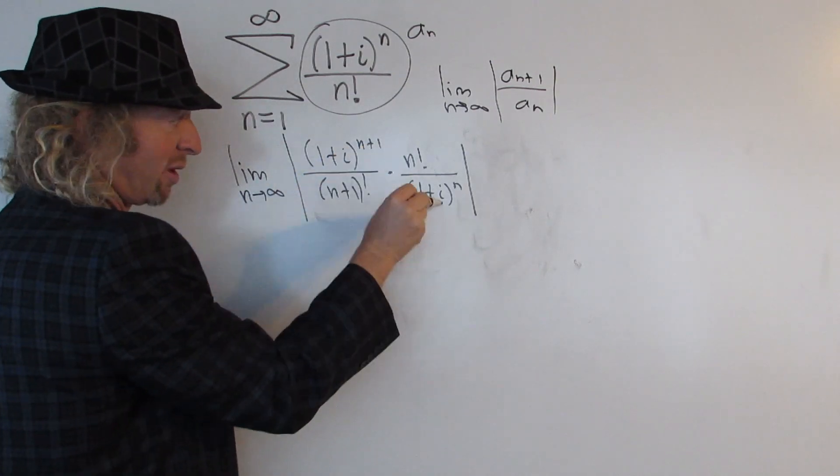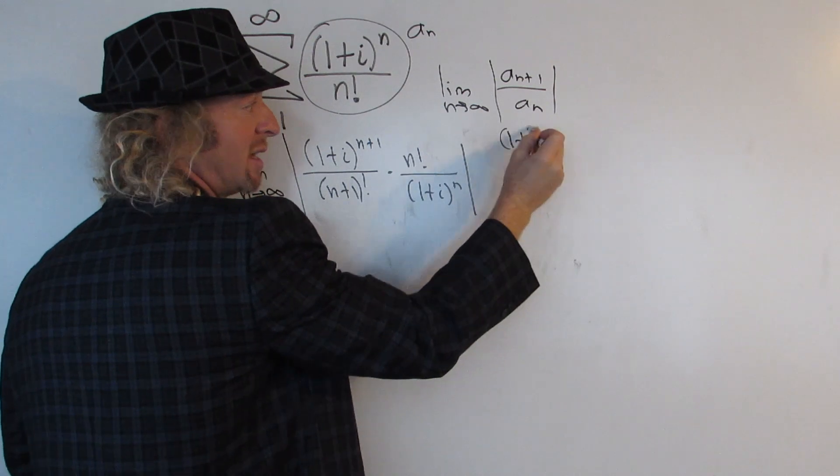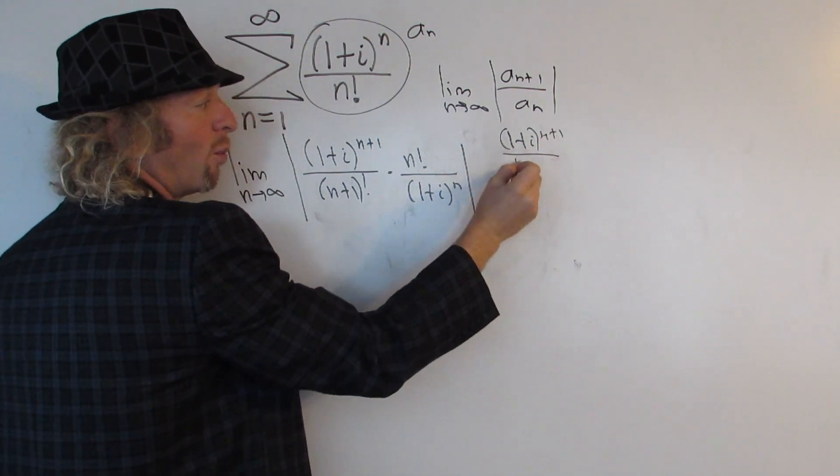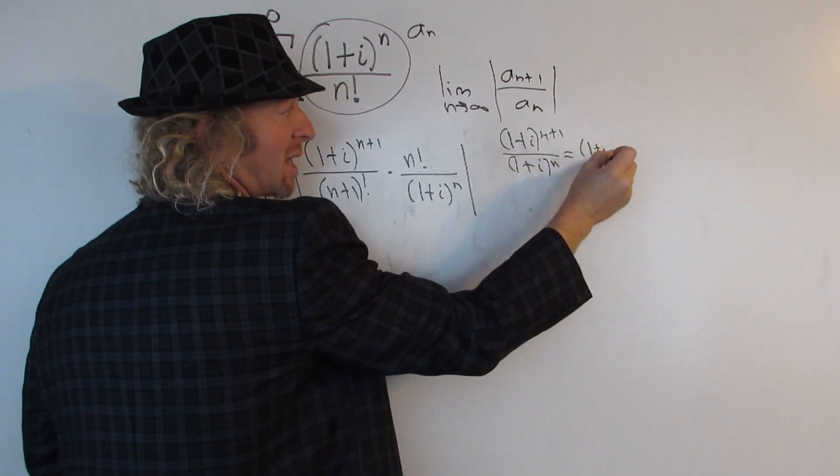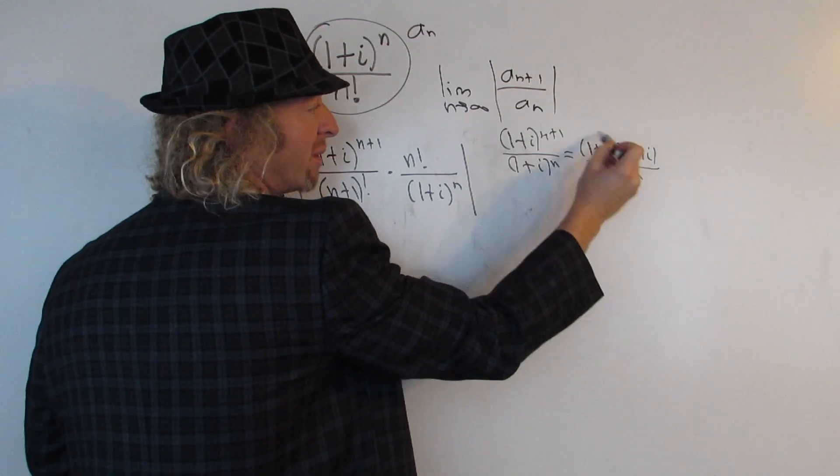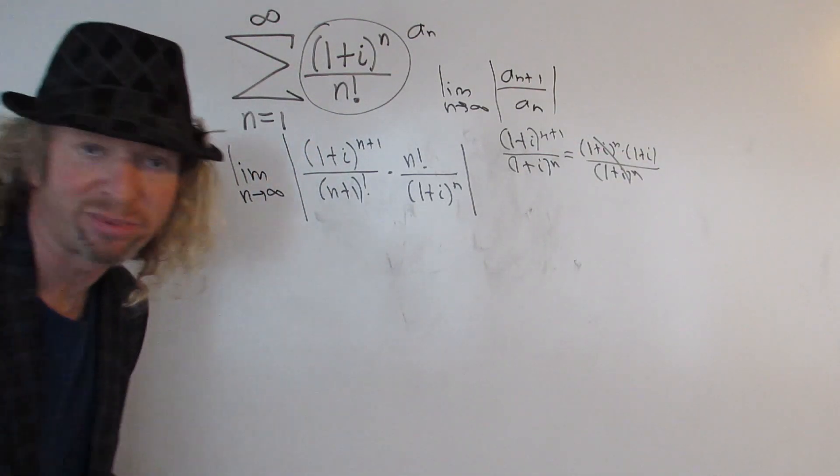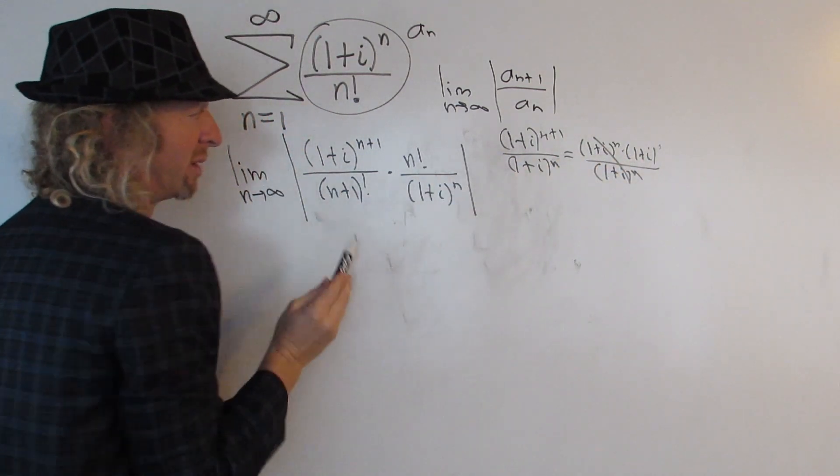So first of all, this (1 plus i) to the n plus 1 over (1 plus i) to the n. Check this out. If you have (1 plus i) to the n plus 1 over (1 plus i) to the n, what happens is you can write this as (1 plus i) to the n times (1 plus i) over (1 plus i) to the n. And the (1 plus i) to the n's cancel, and so you just get (1 plus i). Because when you multiply these, you add the exponents. n plus 1 is n plus 1.